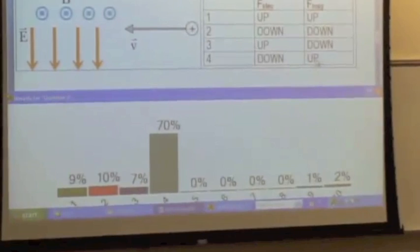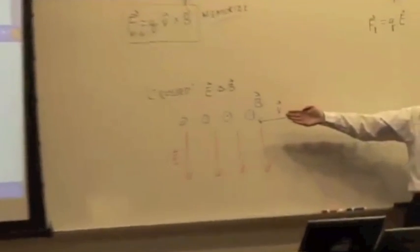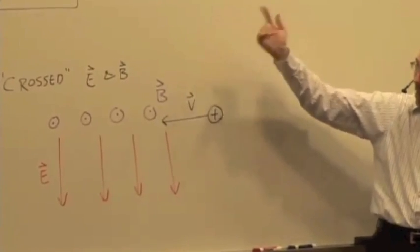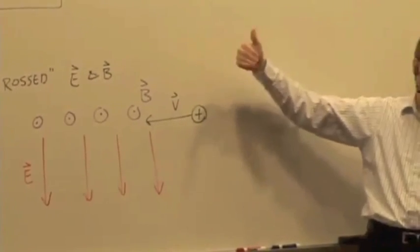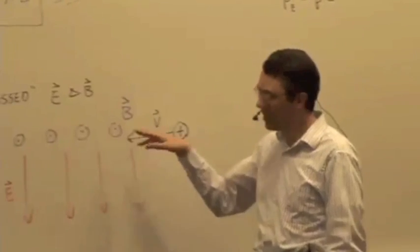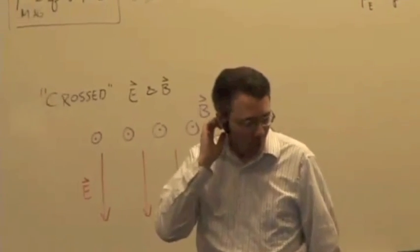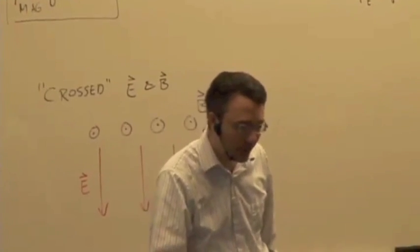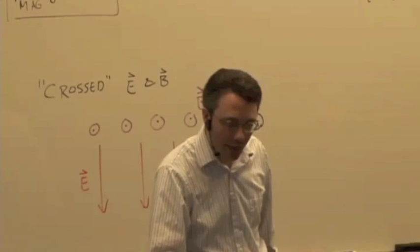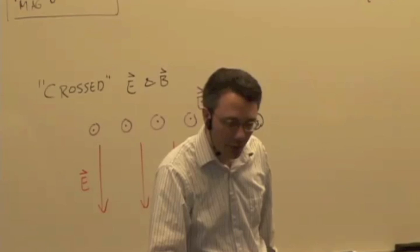The magnetic force turns out to be pointing upward, because we have velocity pointing in that direction, the magnetic field is out, and V cross B is up. Multiply by a positive charge and the vector is still pointing up. So we end up in this situation with crossed E and B fields where the electric and magnetic forces point in opposite directions.